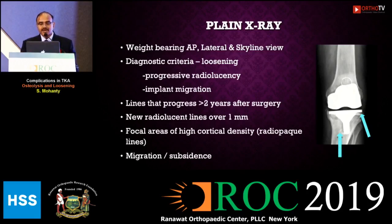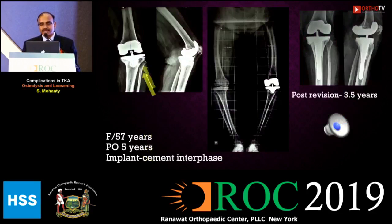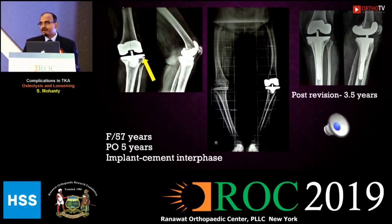There may also be focal areas of high cortical density or migration and subsidence of the implant. In cemented implants, loosening is usually seen at the metal-cement interface. In cementless implants, you will see uniform radiolucent lines more than two millimeters in all zones.